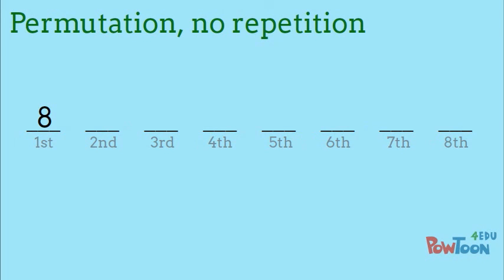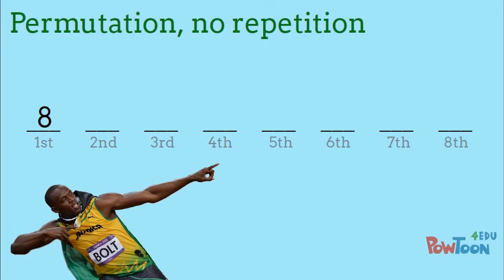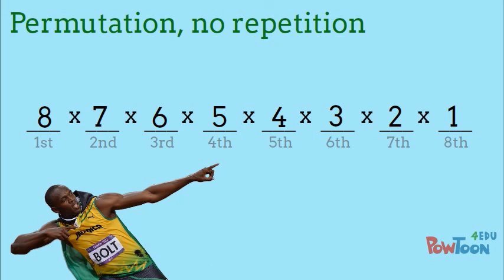There are 8 people who could place first. After Usain Bolt places first, there are 7 runners who could claim second. For the bronze medal, there are 6 runners who could take that spot. This pattern continues down to the one person who's guaranteed last place after the other 7 spots are chosen. We can multiply 8 by 7 by 6 by 5 by 4 by 3 by 2 by 1 to find the number of possible arrangements or permutations of 8 runners.